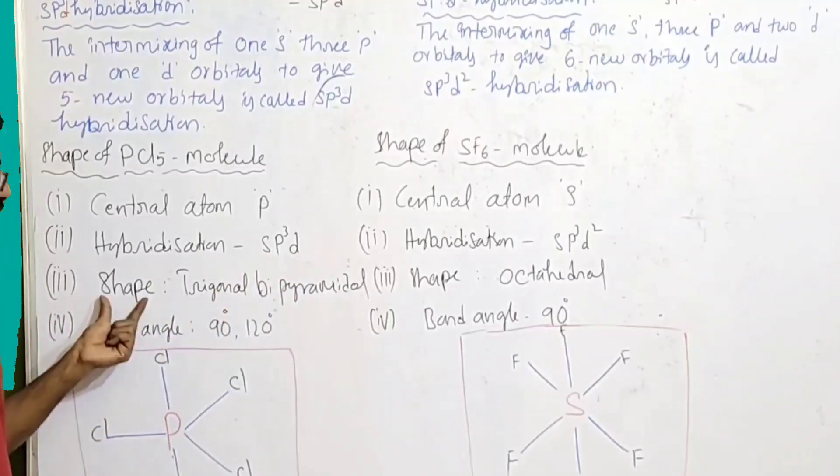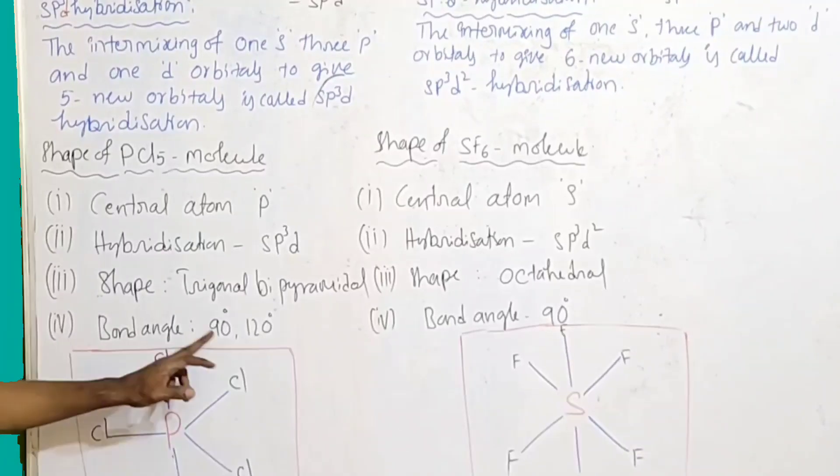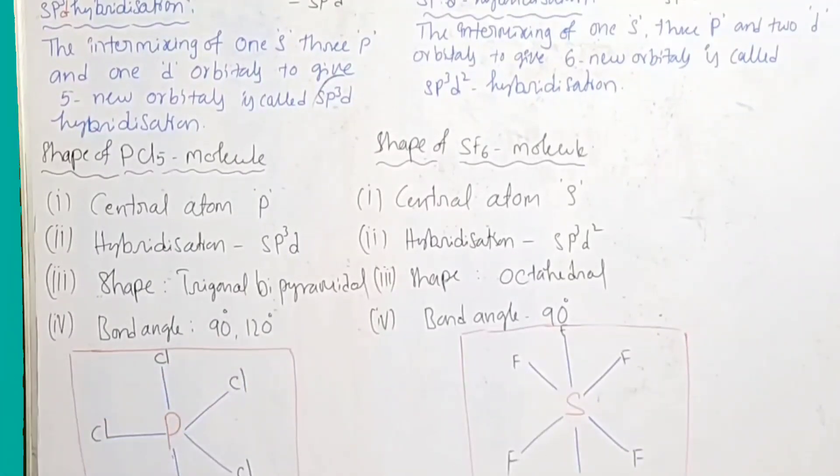Hybridization: sp3d. Shape: trigonal bipyramidal. Bond angles: 90 degrees and 120 degrees - there are two bond angles.